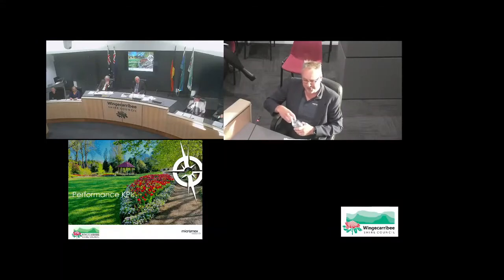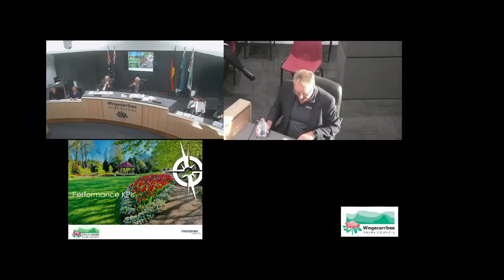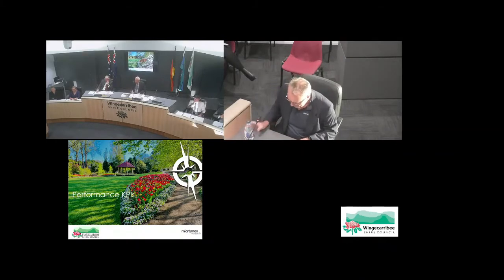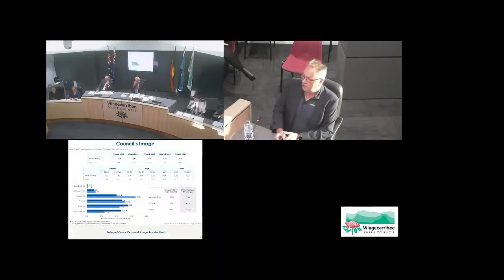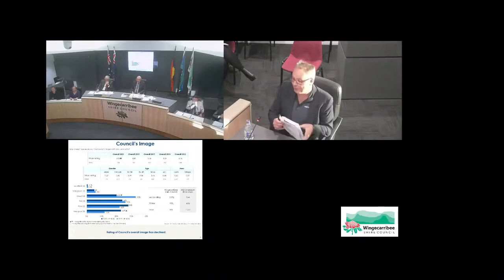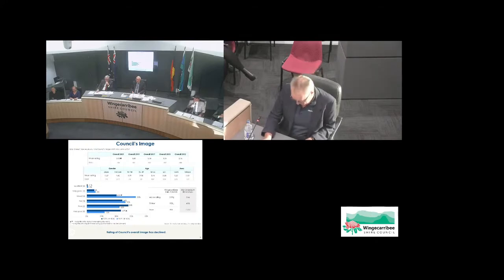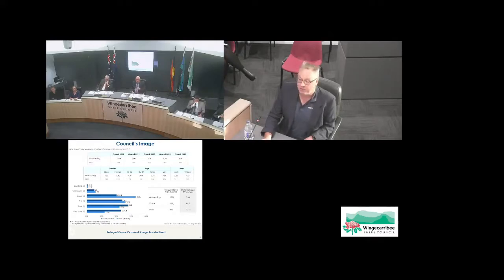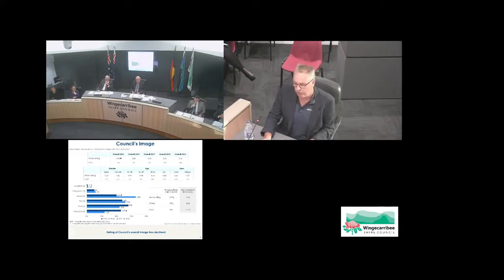Now I'm going to take you through how we rate council servicing — understanding where the priorities are and where council performance fits. Starting with council image: council image has significantly declined since 2019. We now have 25% of people saying council has a good to very good image, compared to 40% back in 2019. Our benchmark score for image is 60% good to excellent, so we're well down on that.